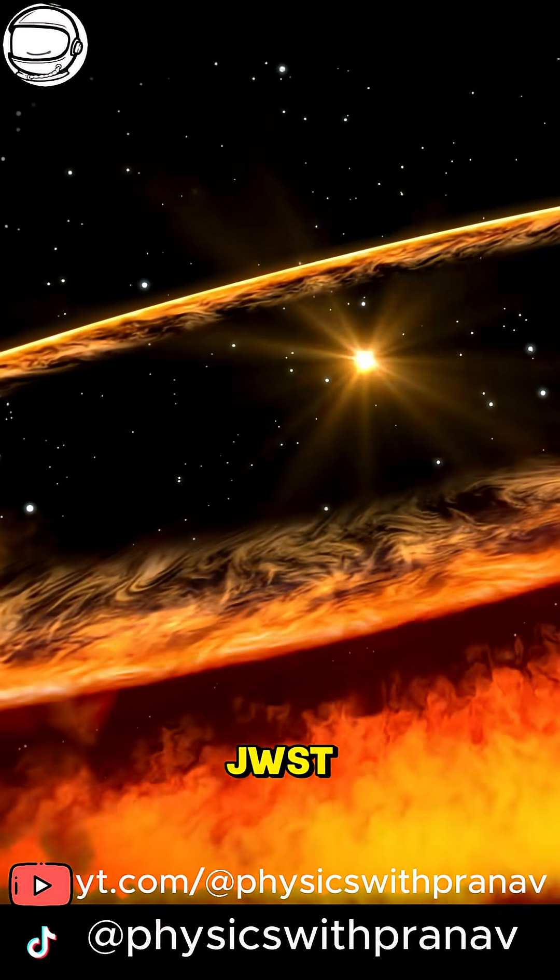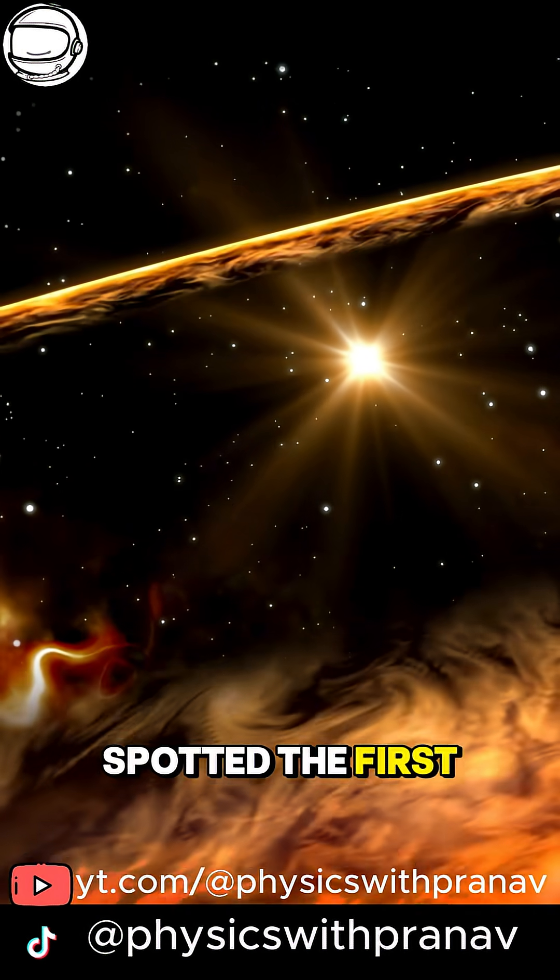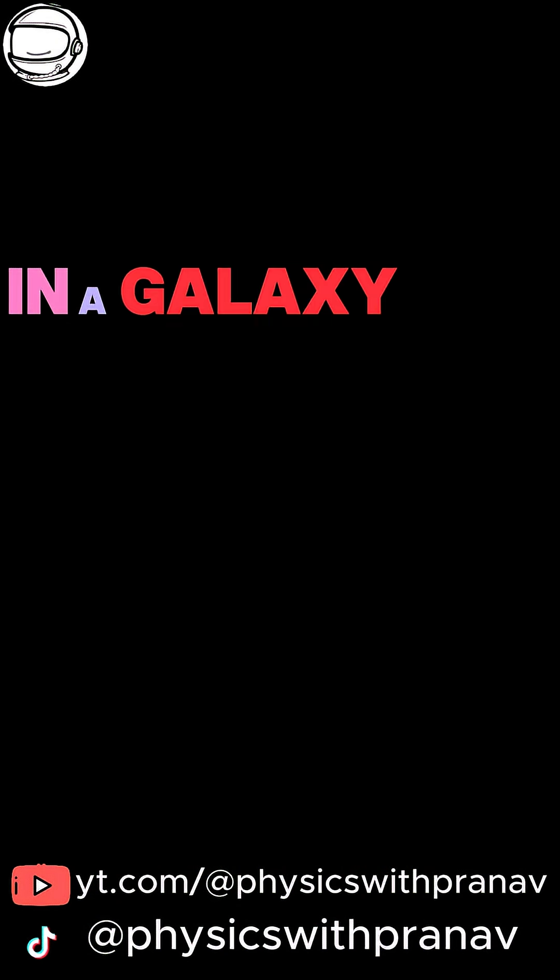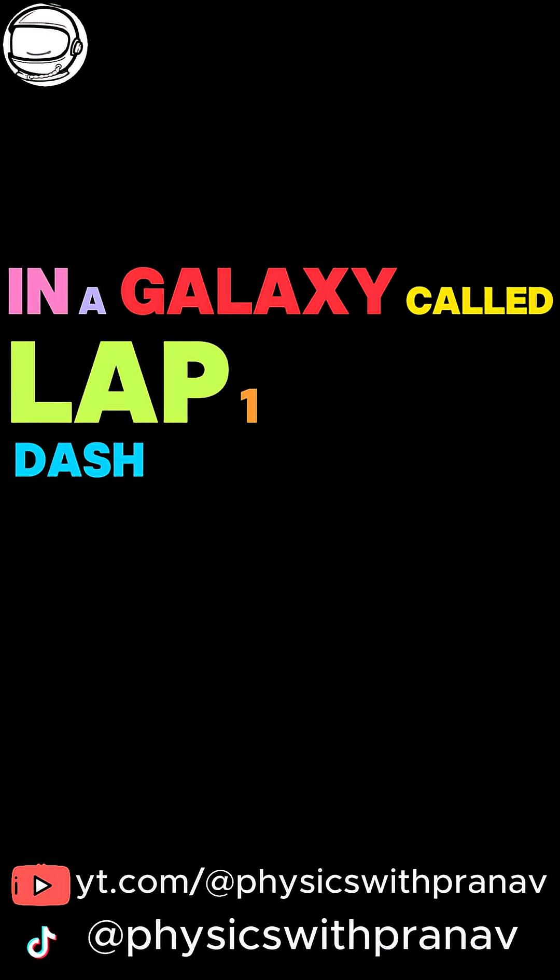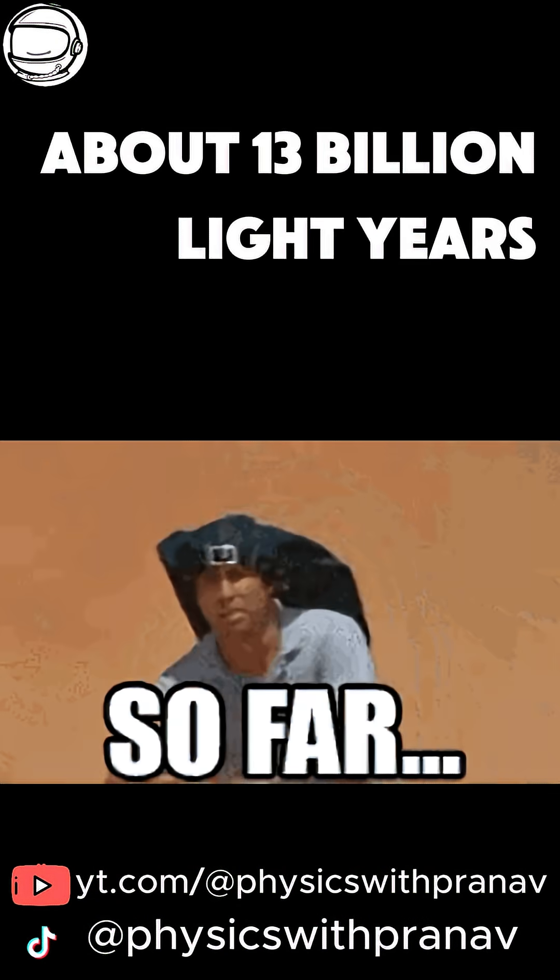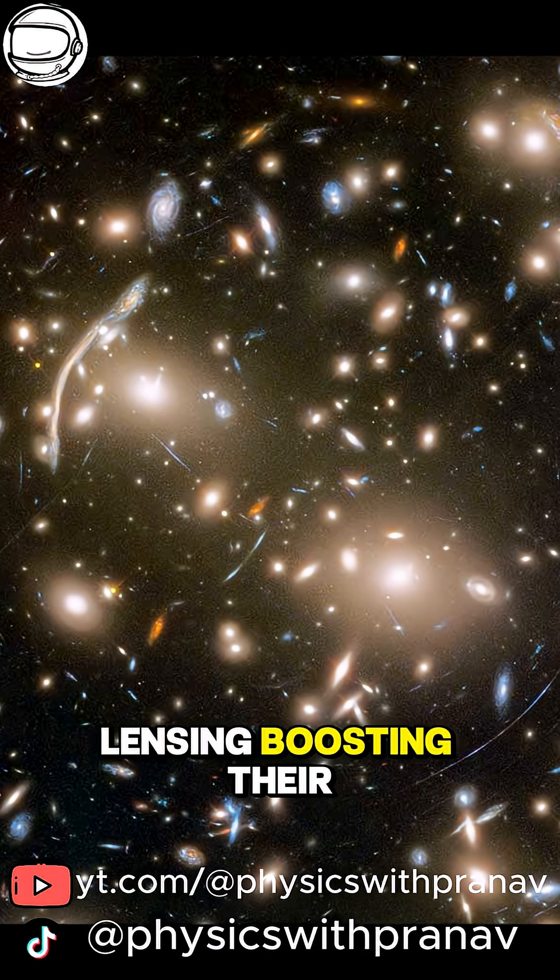Astronomers using JWST may have finally spotted the first Population 3 stars in a galaxy called LAP1-b, about 13 billion light-years away, thanks to gravitational lensing boosting their faint light.